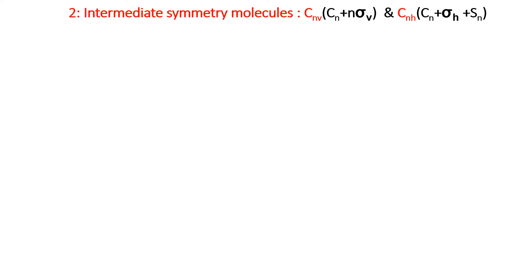For intermediate symmetry molecules: in CNV, the operations are CN plus N number of vertical planes of symmetry (σV). In CNH, the operations are CN plus horizontal plane of symmetry (σH) and improper axis symmetry (SN). The number of SN equals the number of axial rotations N.